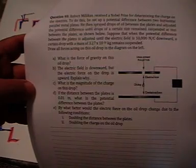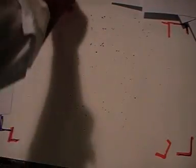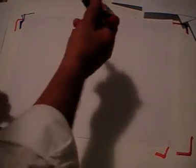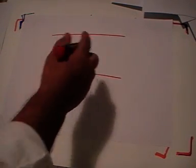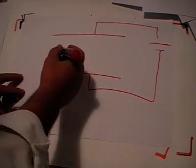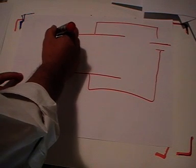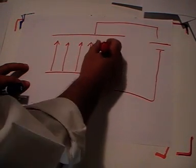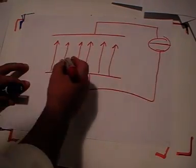We have something called the Millikan experiment — the man won the Nobel Prize for this experiment — and we want to analyze some of what he discovered. We have a parallel plate capacitor connected to a constant voltage, just like before. When you do that, you produce an electric field. The electric field is directed downward inside the capacitor. I draw the field lines equally spaced to indicate the field is uniform, and it has the given magnitude.